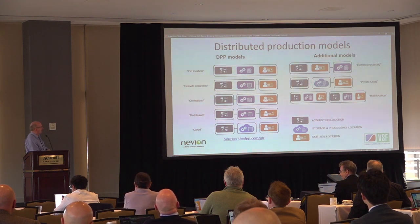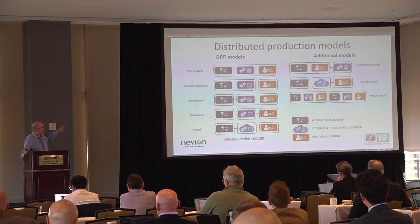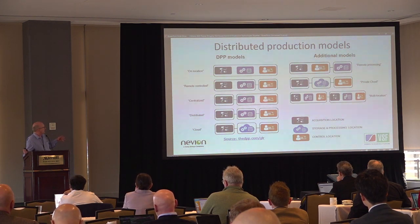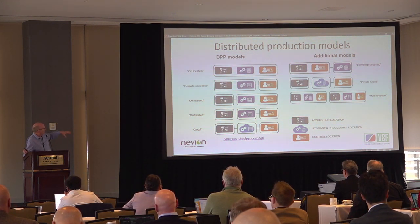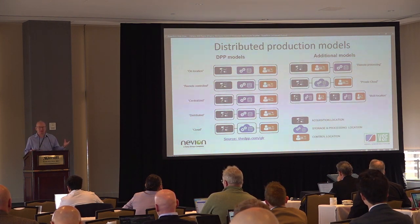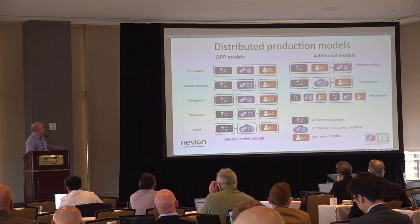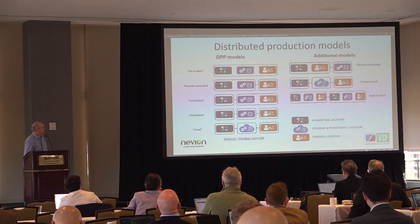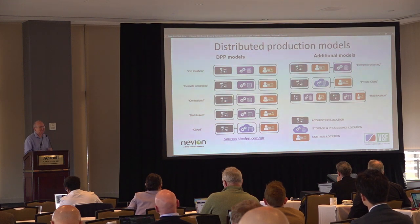This is the DPP model for remote or distributed production. On the left it defines the acquisition location, the storage and processing location, and the control location across different models. The traditional studio has everything co-located at top left, and the other models show different configurations. The DPP originally came up with five models; we've added three more from real-world implementations. It illustrates those three Ps and the flexibility of these different architectures.